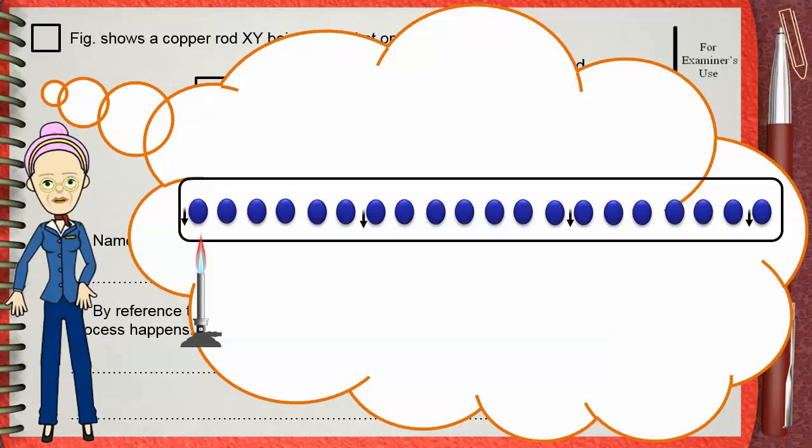Copper atoms are in continuous vibration about their fixed position. When the copper rod is heated from one side, the atoms on this side gain more kinetic energy so they vibrate faster.